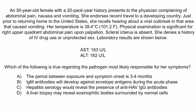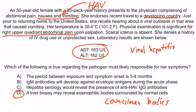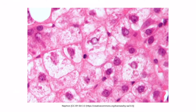Hopefully from the question stem, you notice that this patient likely has viral hepatitis. She has abdominal pain in her right upper quadrant, and her liver enzymes are elevated. You should also be thinking of a viral hepatitis that causes nausea and vomiting, which makes hepatitis A most likely. Plus, she was traveling to a developing country, which is one of the risk factors for hepatitis A. So thinking of hepatitis A, the correct answer is choice D — liver biopsy may reveal eosinophilic bodies surrounded by normal cells. This describes councilman bodies, which are these eosinophilic councilman bodies adjacent to the healthy hepatocytes.